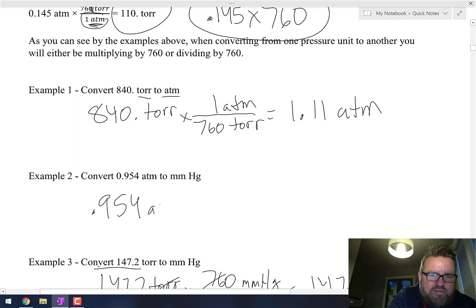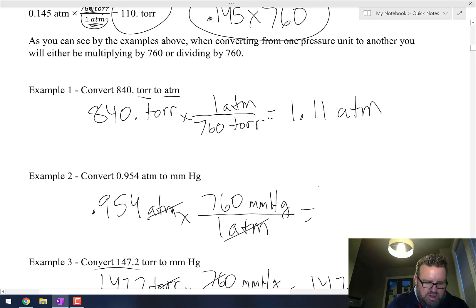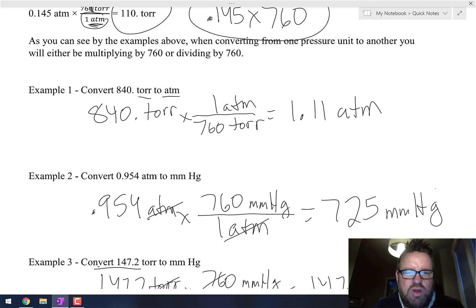Example number two: we're going to take 0.954 atmospheres and we're going to convert that to millimeters of mercury. We know the conversion is that one atmosphere equals 760 millimeters of mercury. Our atmospheres cancel, so now we take 0.954 and we multiply by 760 and we get 725 millimeters of mercury.